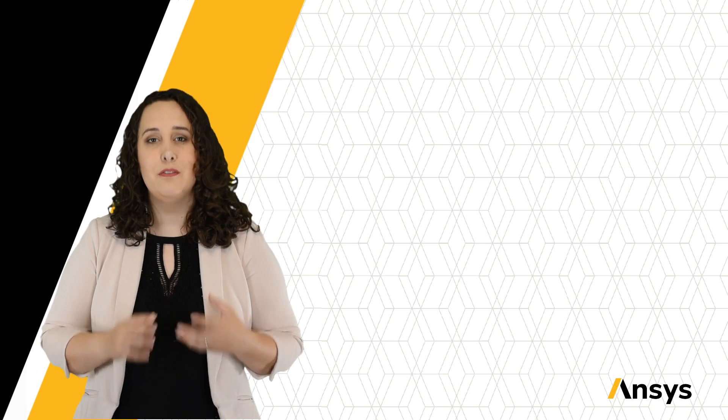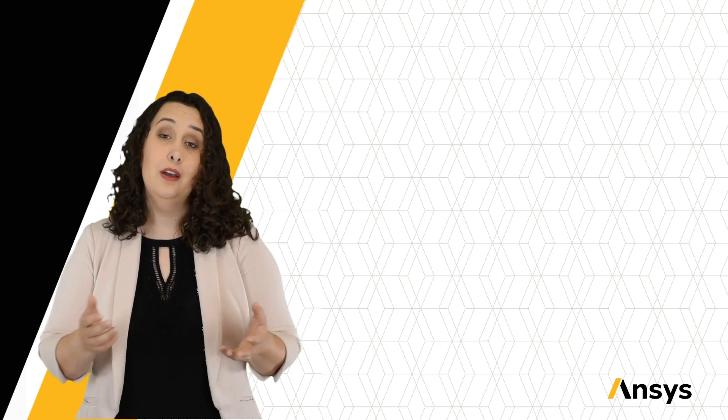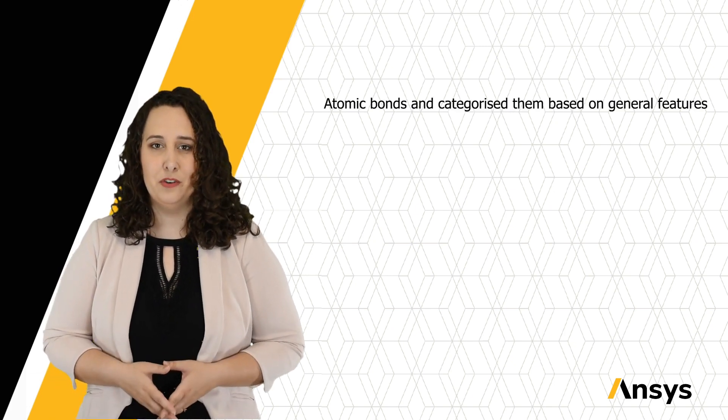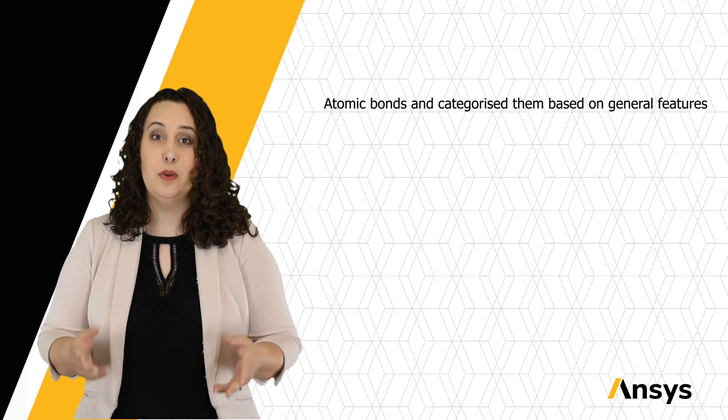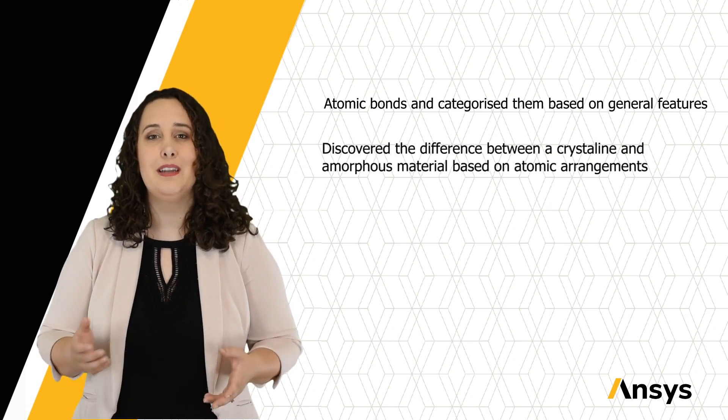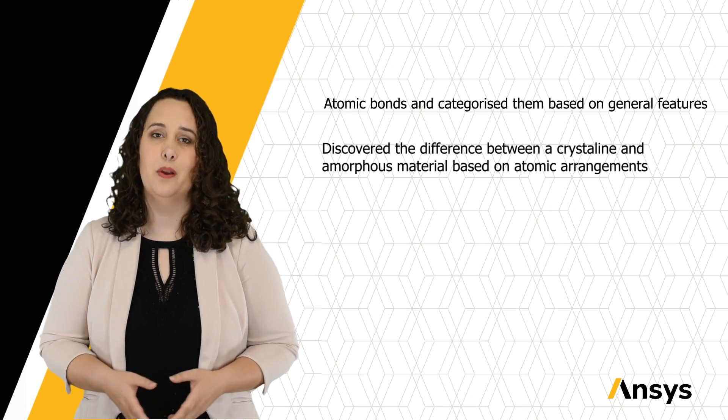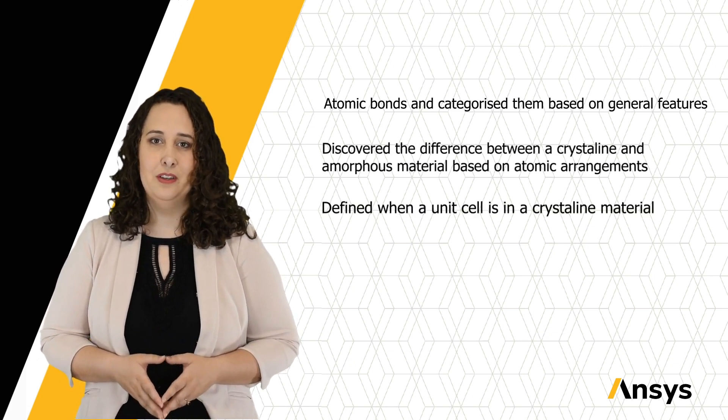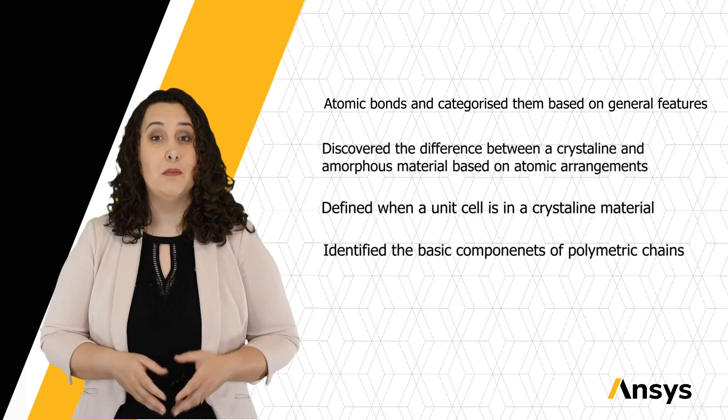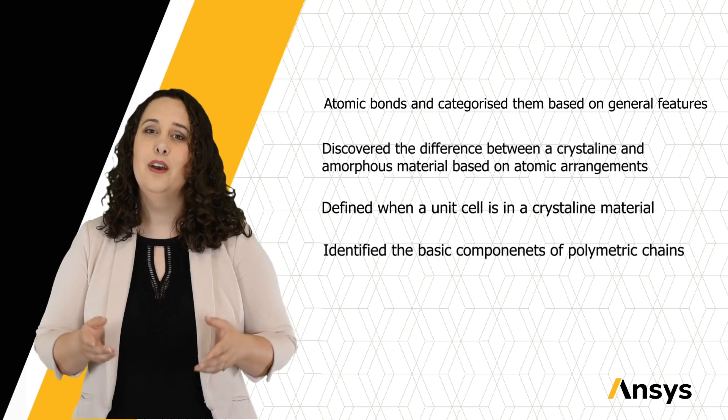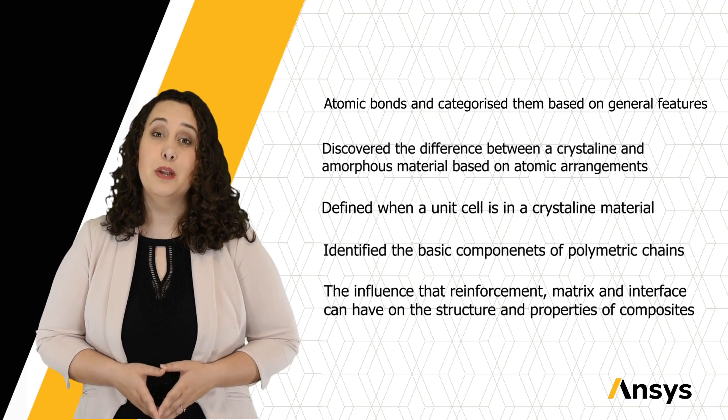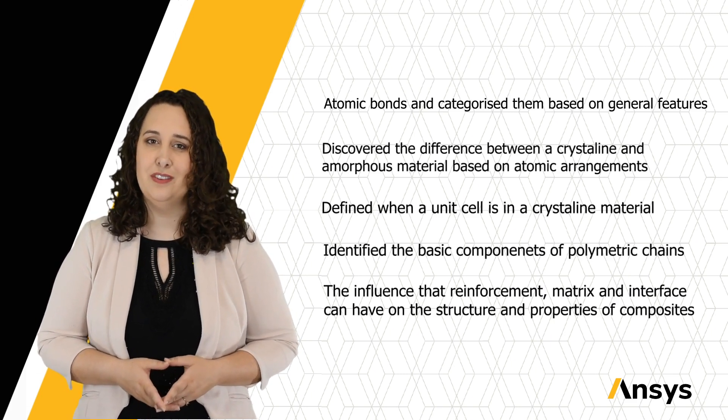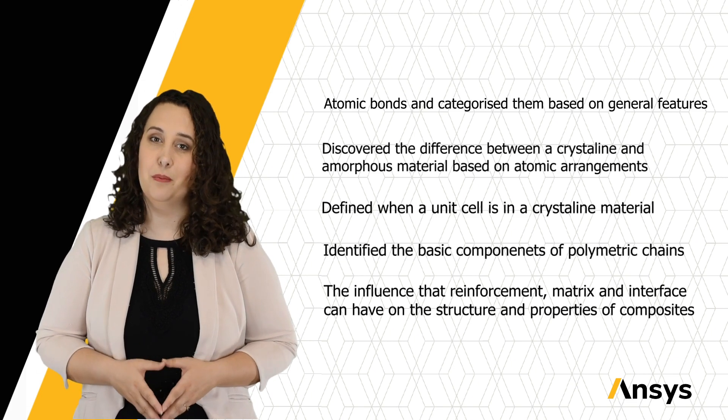But we've laid the foundations. We've talked about atomic bonds and categorized them based on general features. We've discovered the difference between crystalline and amorphous materials based on atomic arrangement, and defined when a unit cell is in a crystalline material. We've identified the basic components of polymeric chains. And finally, we've talked about the influence that reinforcement, matrix, and interface can have on the structure and properties of composites.